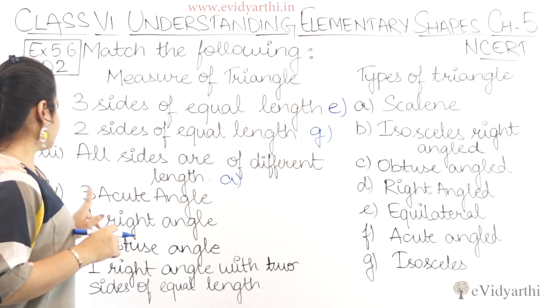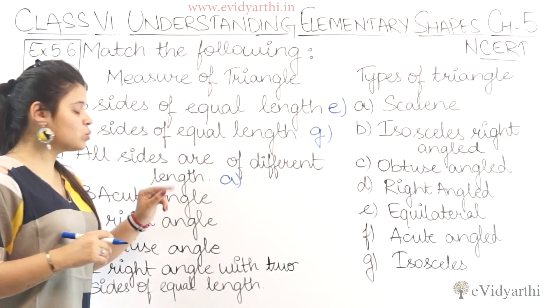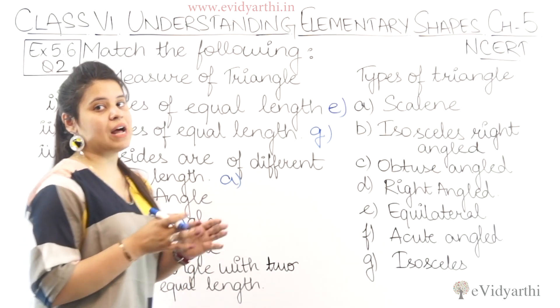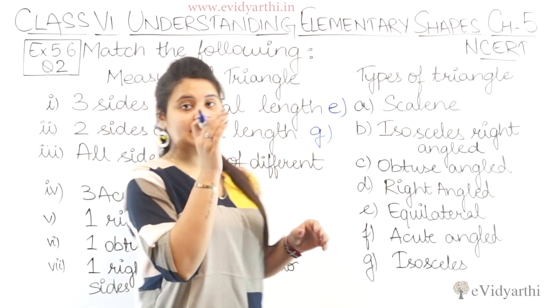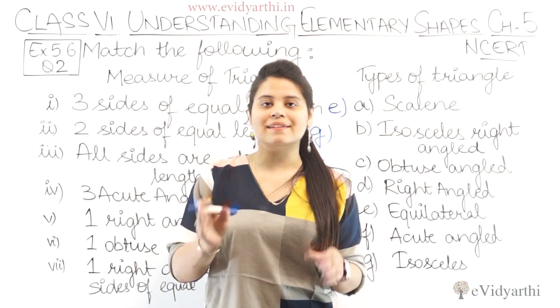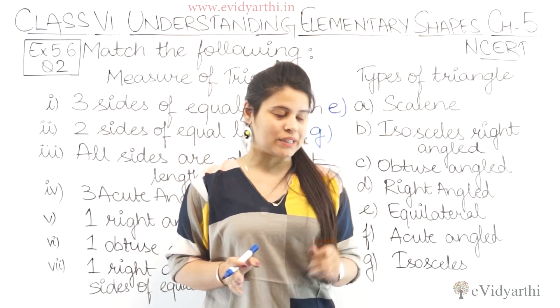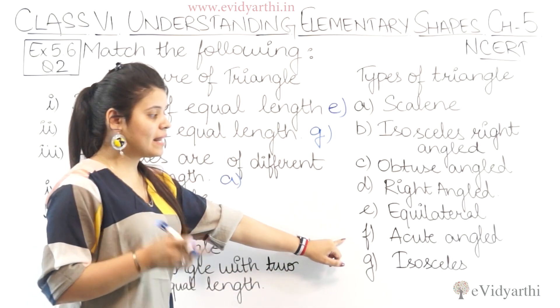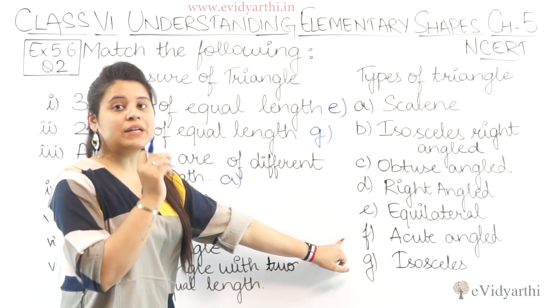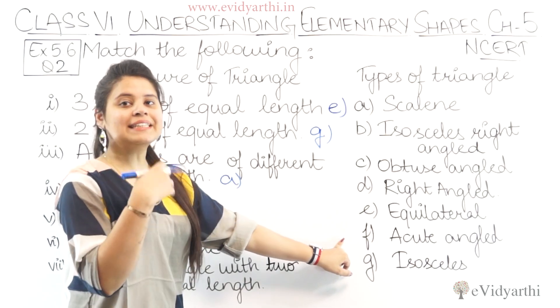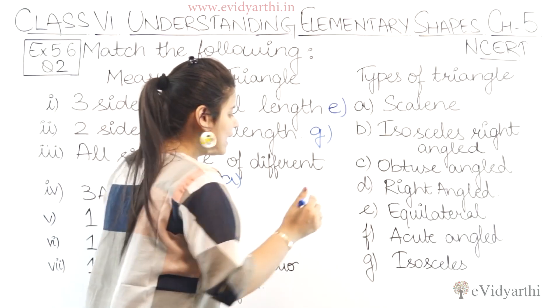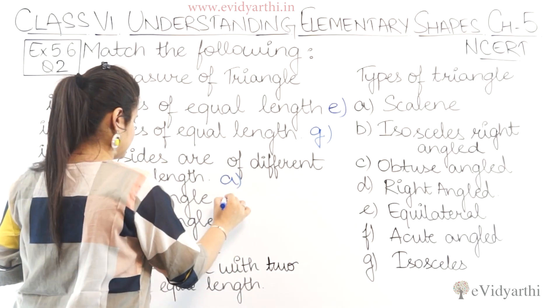Then we have three acute angles. This is a triangle in which all three angles are acute. So that will be an acute angle triangle, which is the F part.